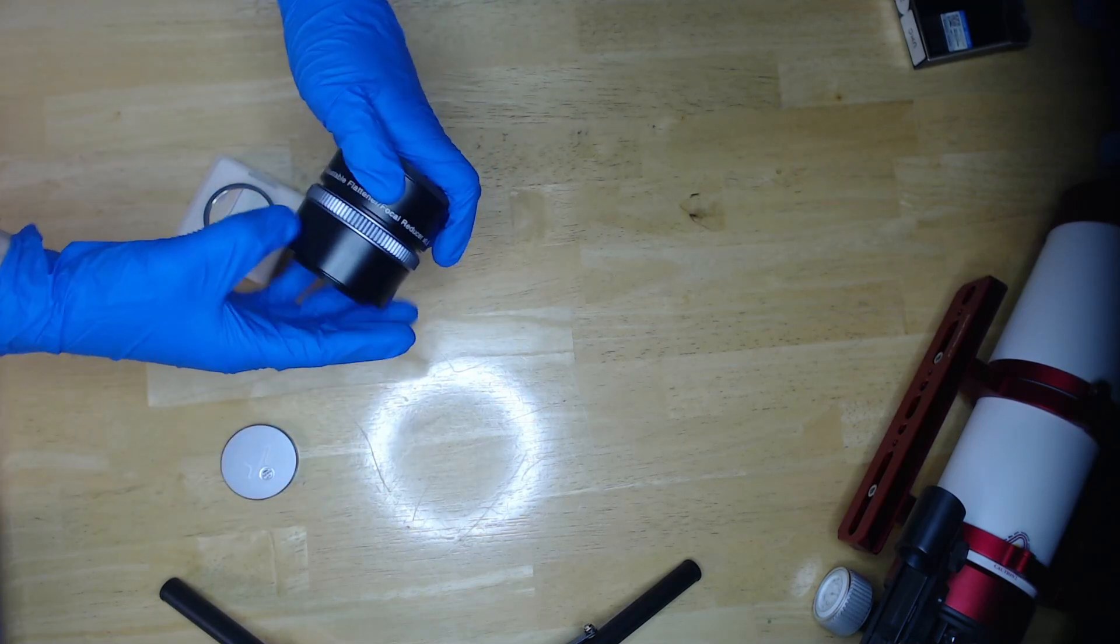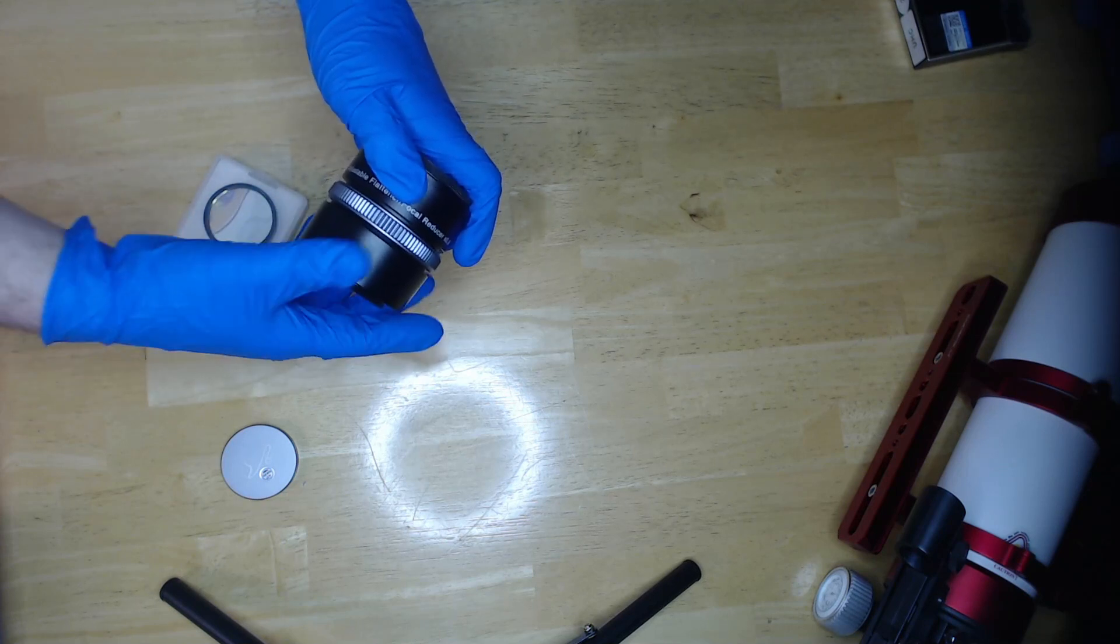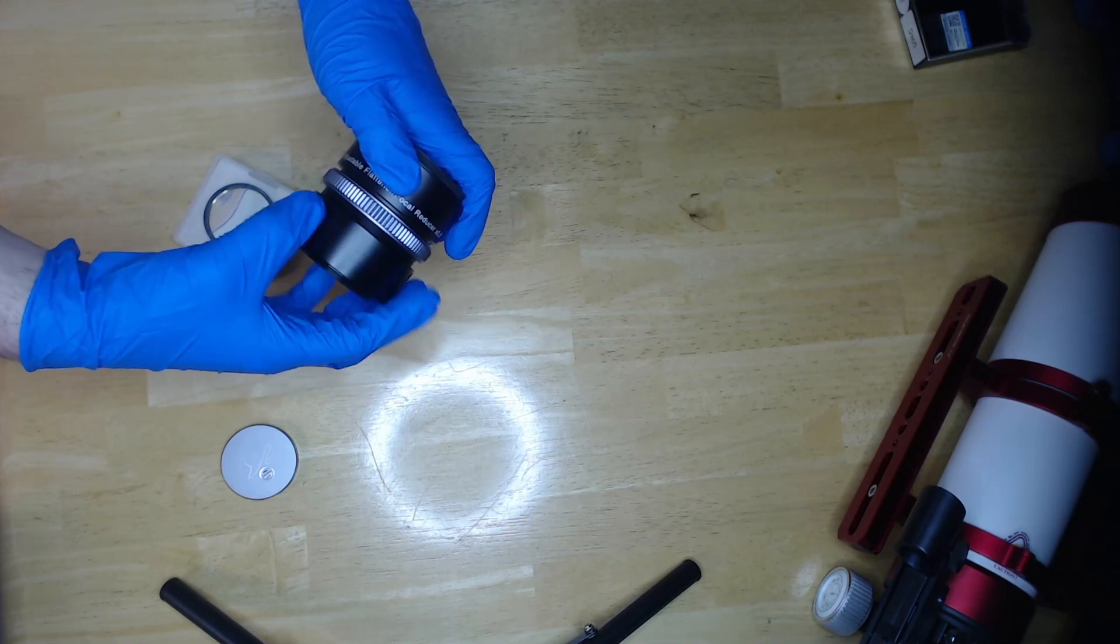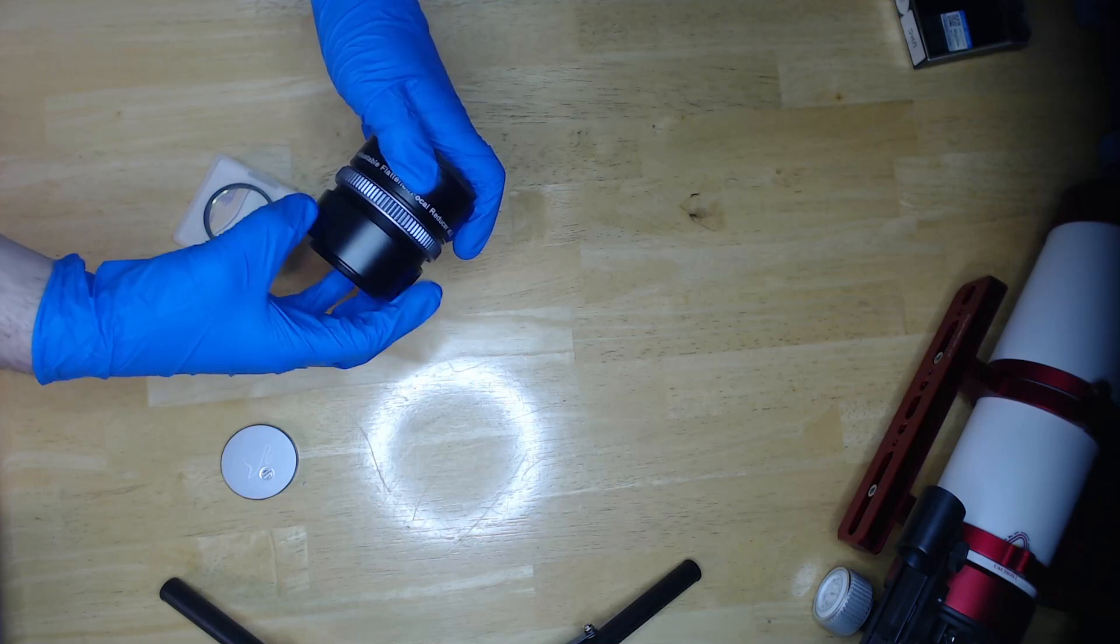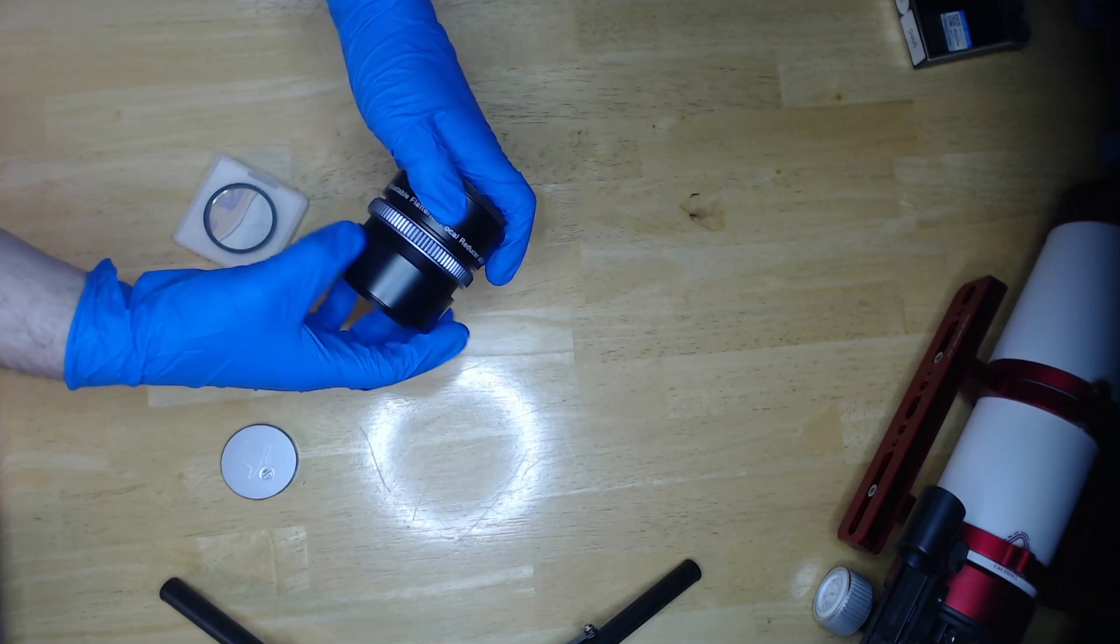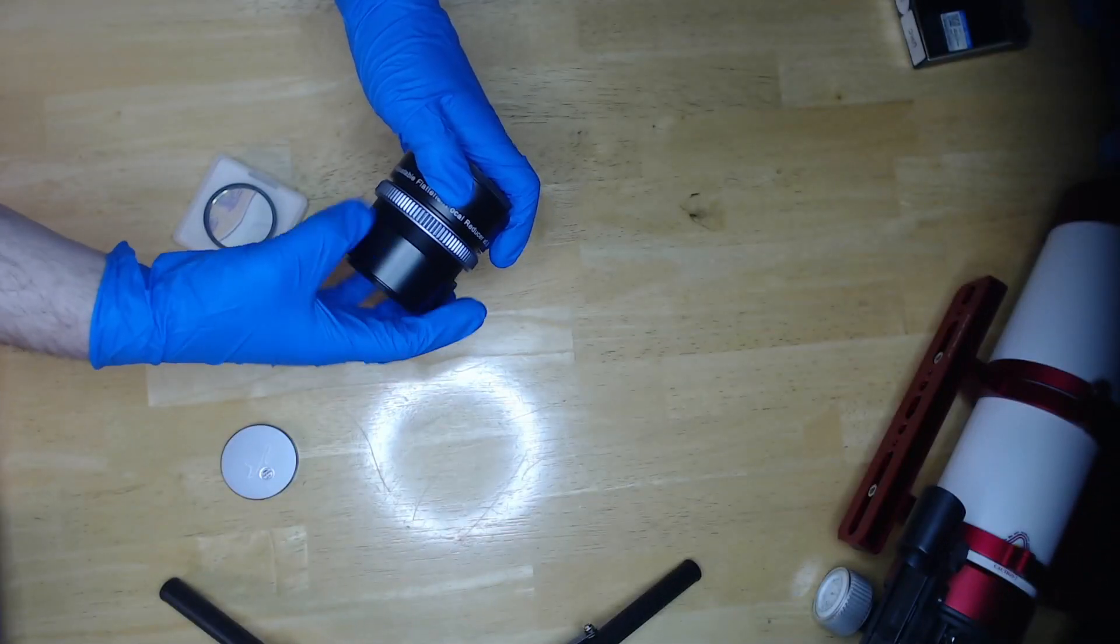Then, using both hands, unscrew the big black cap at the end of the focal reducer—the part without any text. Since the 6A3 is an adjustable device, we can unscrew this quite a ways as it was meant to be moved back and forth to get the ideal back focus for your camera.